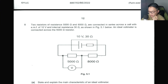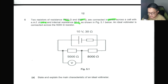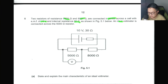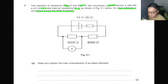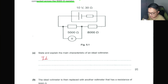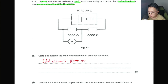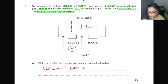Question 5 is a DC circuit question. We have two resistors of 5000 Ω and 8000 Ω connected in series across a cell of EMF 10 V with internal resistance 30 Ω. An ideal voltmeter is connected across the 5000 Ω resistor. State and explain the main characteristics of an ideal voltmeter.